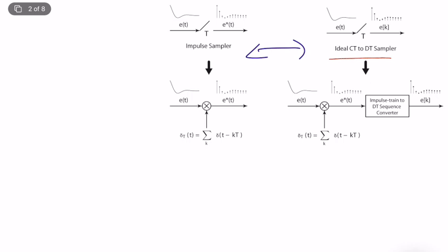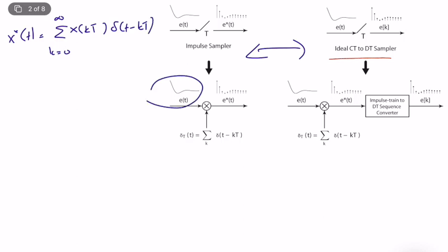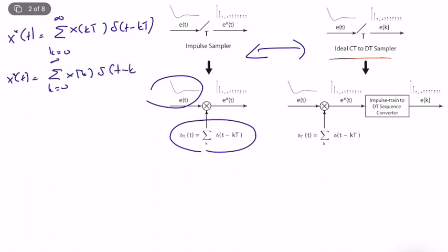We have x*(t), which is equal to the sum from k equals zero to infinity of x(kT) · δ(t − kT). If we multiply a continuous-time signal with this unit impulse train, we obtain this signal. This is our discrete-time signal — the same information obtained from a continuous-time to discrete-time sampler — and the impulse train signal technically stores the sampling time or sampling frequency information.